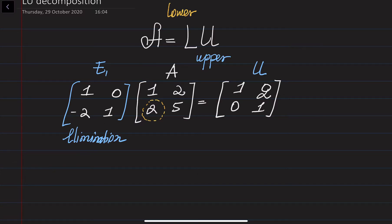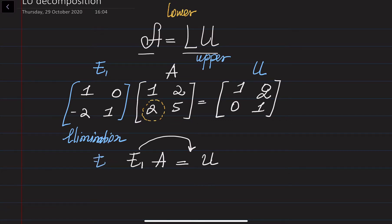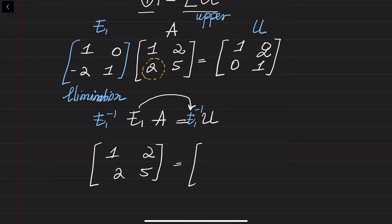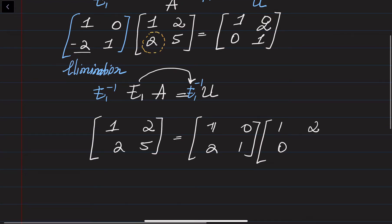So we have E1 times A equals U. What I wanted to get is A equals L times U. So I need to move E1 to the other side. One way to do this is to multiply by the inverse of E1 on both sides. Fortunately, E1 is an elementary matrix and finding its inverse is straightforward. The matrix A is [1, 2, 2, 5], while the inverse of E1 is simply [1, 0, 2, 1] — we just put plus instead of minus. This should be multiplied by the U matrix with components [1, 2, 0, 1].